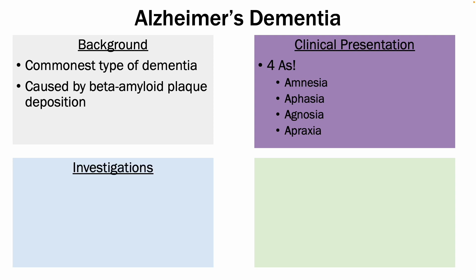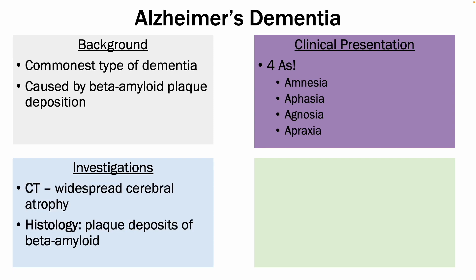In terms of investigations, you can perform a CT scan, which would show you widespread cerebral atrophy, and you could perform histology, which would show you plaque deposition of beta-amyloid within the affected brain.